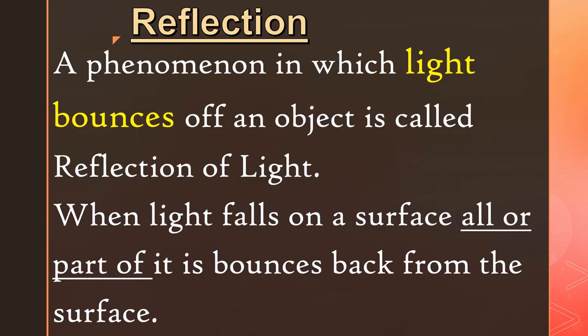Let's start with knowing what is reflection. A phenomenon in which light bounces off an object is called reflection of light. When light falls on a surface, all or part of it bounces back from the surface. The phenomenon of reflecting back or bouncing back is termed as reflection.